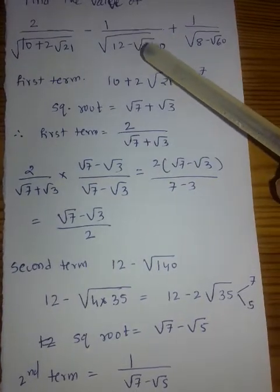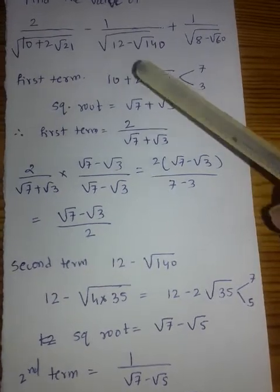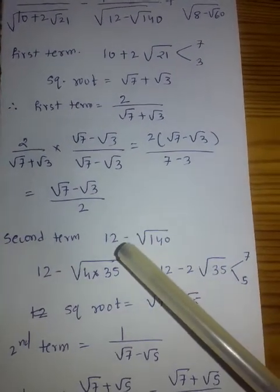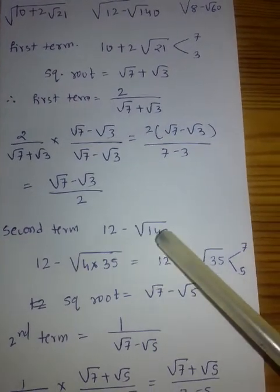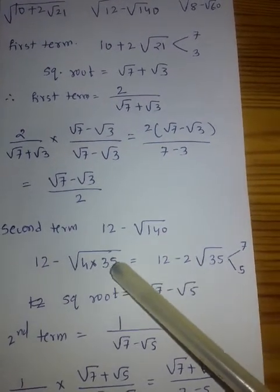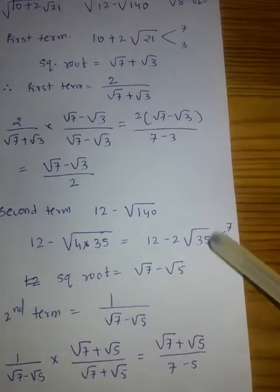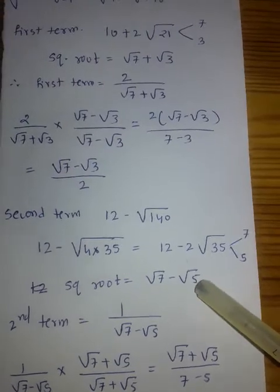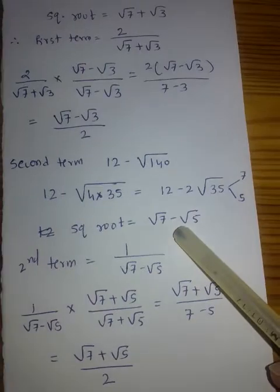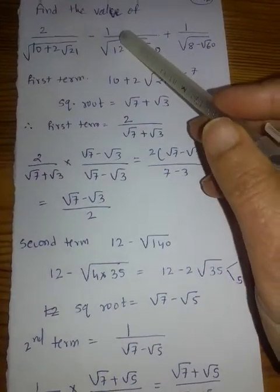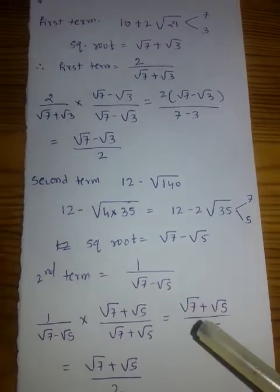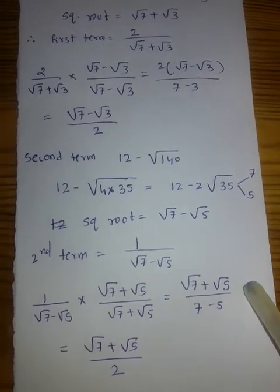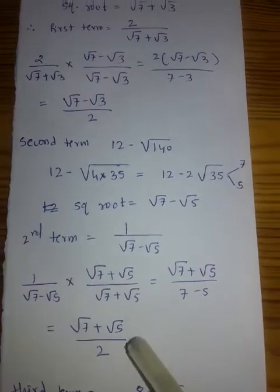Second term denominator: √(12 − √140). Write in form a − 2√b: split 140 as 4 × 35, bring 2 out — giving 12 − 2√35. Split 35 as 7 × 5; 7 + 5 = 12. Square root is √7 − √5 (minus sign because of the subtraction). So second term is 1/(√7 − √5). Rationalize by multiplying by (√7 + √5)/(√7 + √5): denominator becomes 7 − 5 = 2. Second term = (√7 + √5)/2.